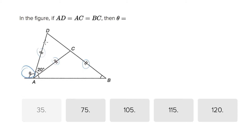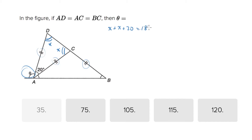When you have isosceles triangles, you know that the opposite angles to the equal length sides are also equal measure. So angle ADC and ACD are the same measure. Since the sum of the angles in a triangle equals 180, let's call them X: X plus X plus 20 equals 180, so 2X equals 160, and X equals 80.